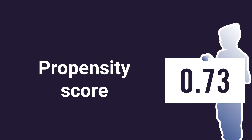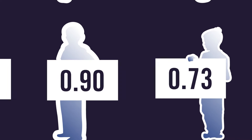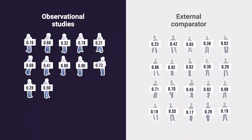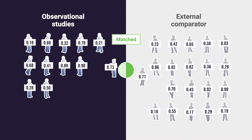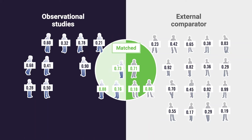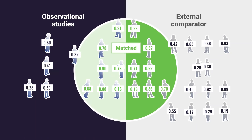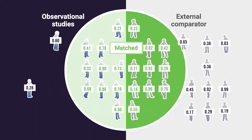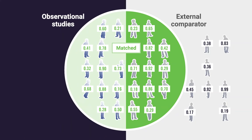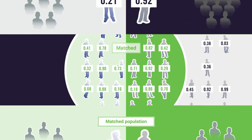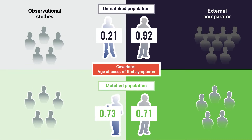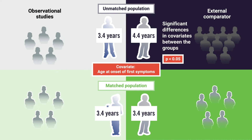The propensity score is a collation of the information about all the covariates of interest into one number for each patient. Once propensity scores have been calculated, a one-to-one matching process is initiated, whereby each patient in the study of interest is paired with the patient in the comparator group with the most similar score, until patients are matched. The quality of propensity score matching can be confirmed by showing that significant differences in covariates between the groups before matching are eradicated after matching.